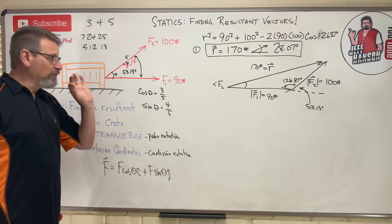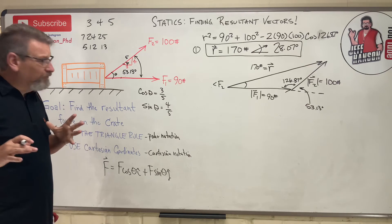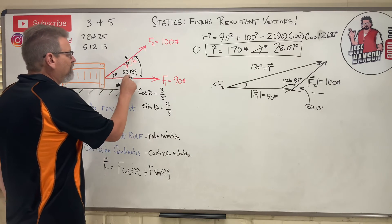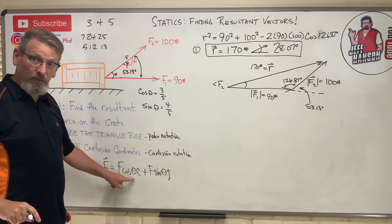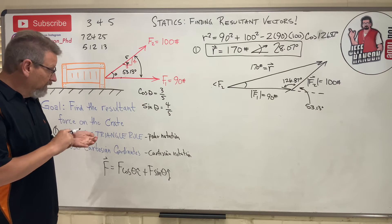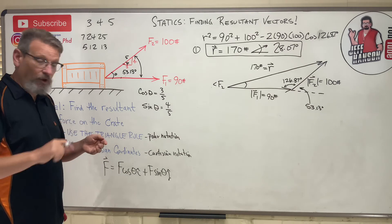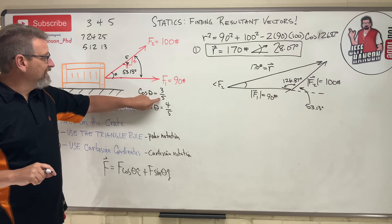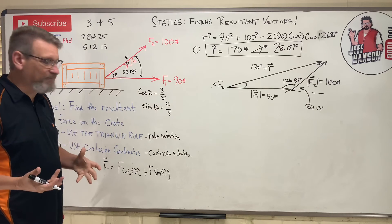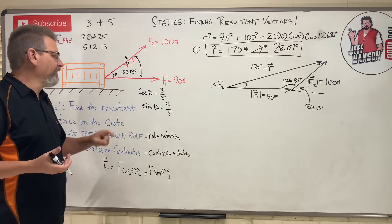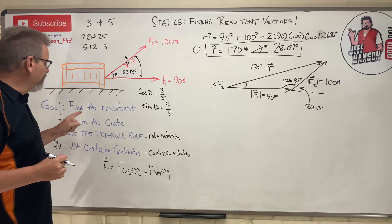That's a shortcut — if it confuses you, you can still use 53.13 degrees and write F·cos(53.13°). But cos(53.13°) = 0.6, and 3/5 is also 0.6 — they're the same thing. Use whatever you're comfortable with; the fraction form will save you time once you're used to it.